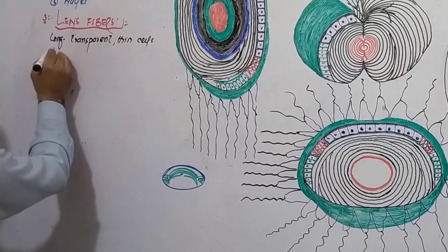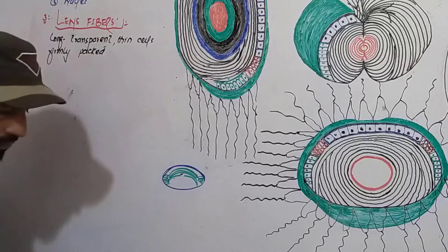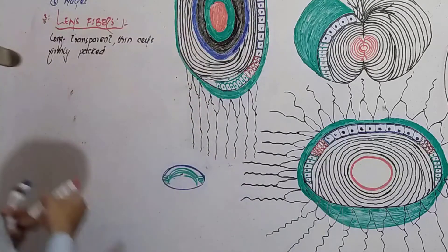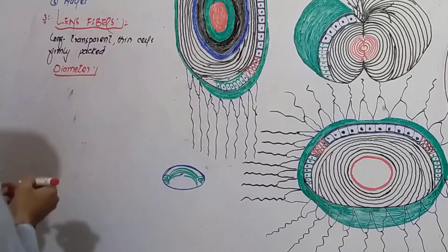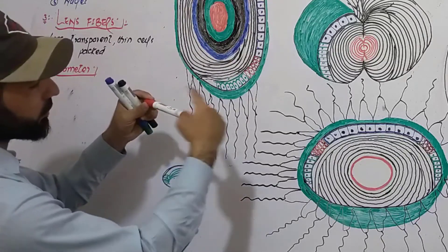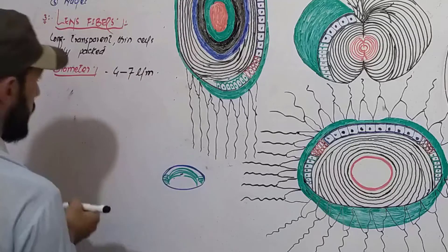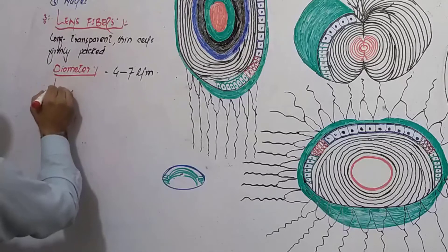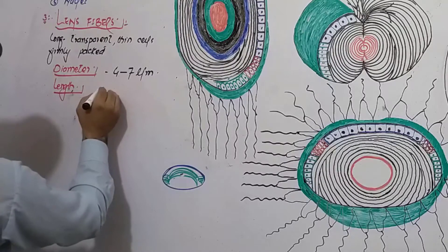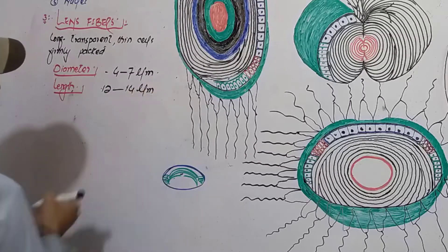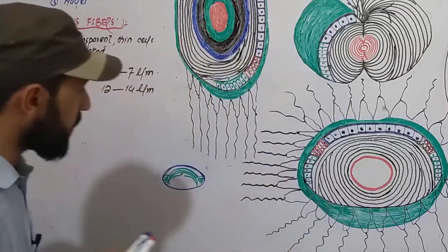Lens fibers are long, thin, transparent, closely packed cells. What is the diameter of these cells? Their diameter is from 4 to 7 micrometers. And about the length of these fibers — they are 10 to 14 micrometers long.